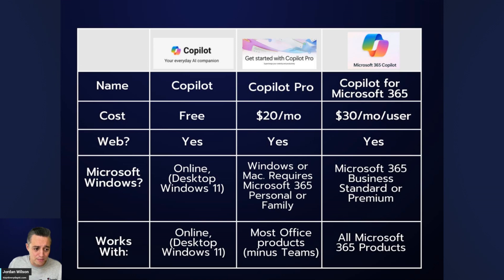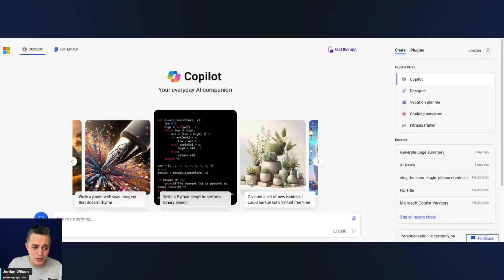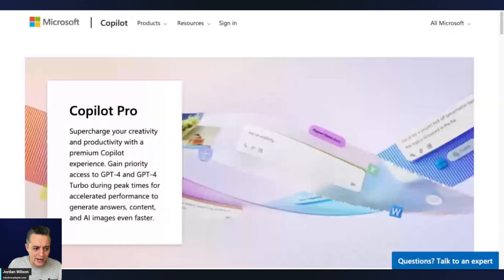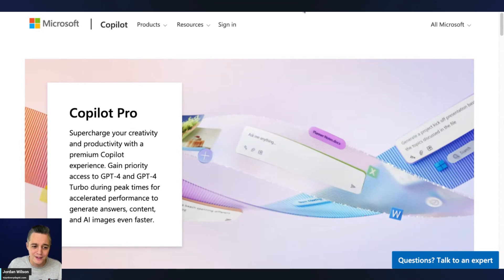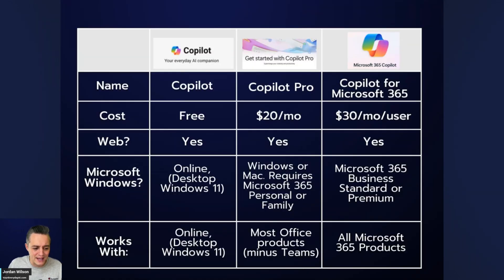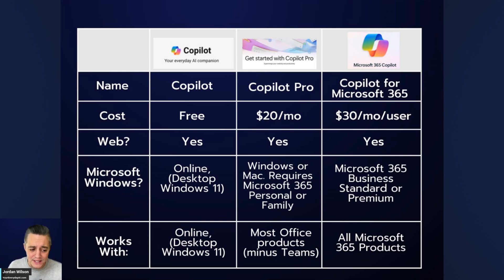Before we get into this chart that compares them all, let me show you. So this is the free version of Copilot that's available on the web. And then you have Copilot Pro. And last but not least, you have the enterprise version, which is Microsoft Copilot for Microsoft 365. A lot of jargon, but let's do a high-level overview of the difference between all three.